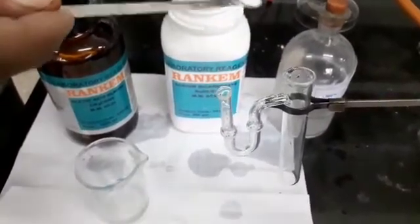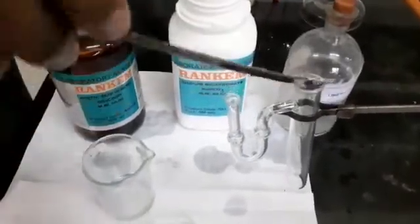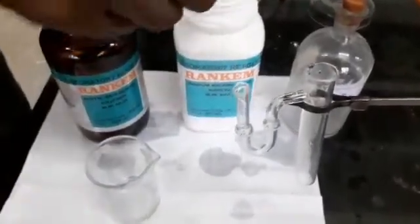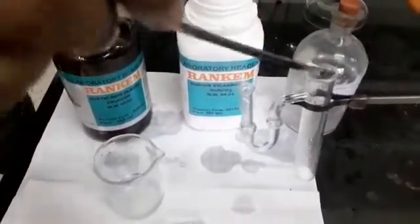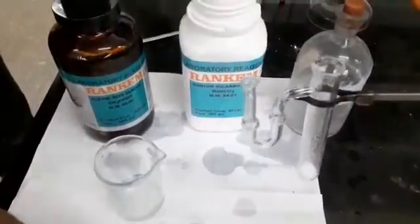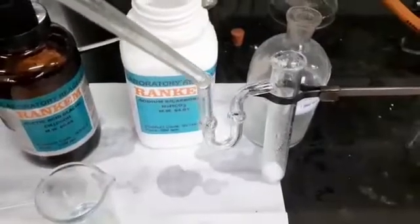For this experiment, we will add baking soda to this gas passing tube, and then add some lime water to this U-tube in advance.